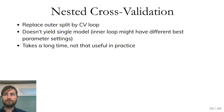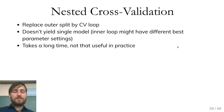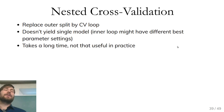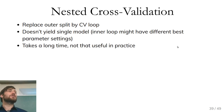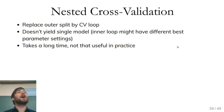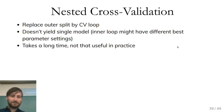A practical note: if your model takes a long time to train or you have a lot of data, just do a three-fold split without cross-validation. In deep learning, nobody does cross-validation because one training run can take a week on a GPU; multiplying that by five folds is not feasible. With large datasets, a single split is fine. It's always a trade-off between how much time you invest and how good your evaluation needs to be.